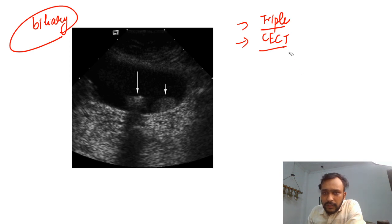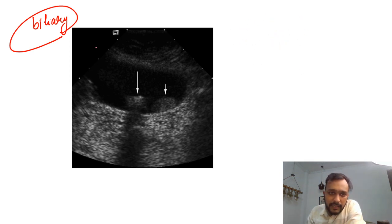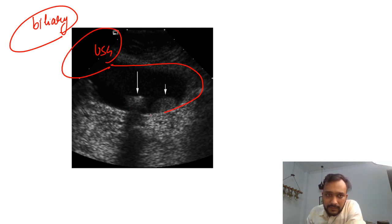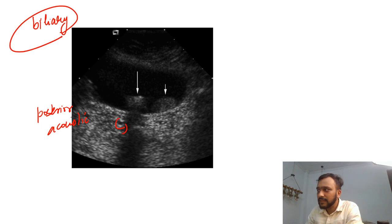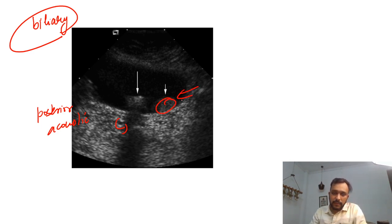This is an ultrasound image of the abdomen. In this gallbladder we are seeing a calculus, and this calculus is showing posterior acoustic shadowing. This is how posterior acoustic shadowing looks like.